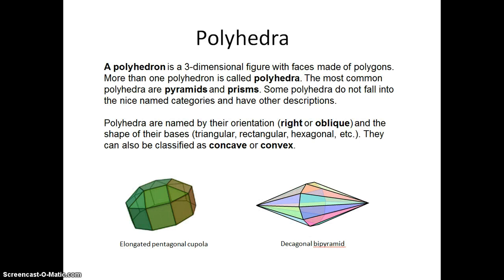A polyhedron is a three-dimensional figure whose faces are made up of polygons. There are lots of three-dimensional geometric figures, but polyhedra are only those whose faces are shaped like a polygon.